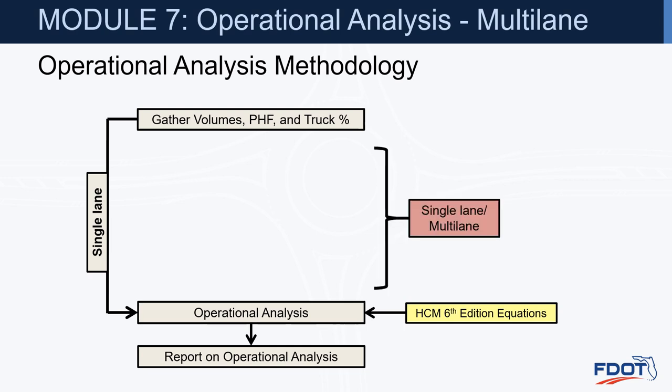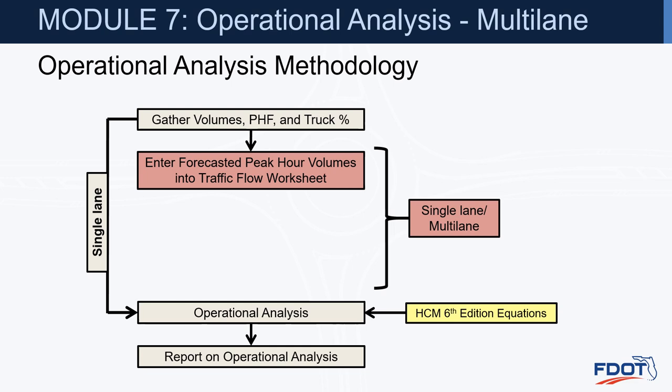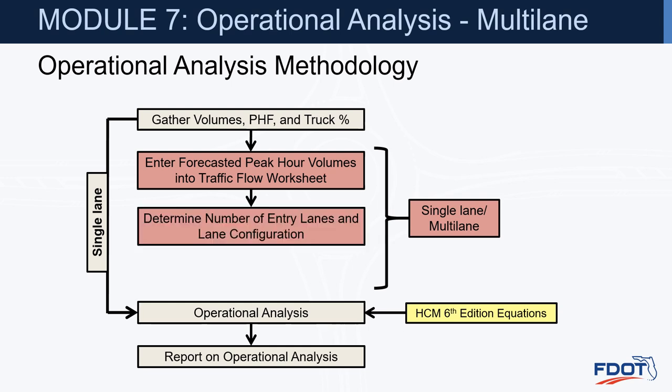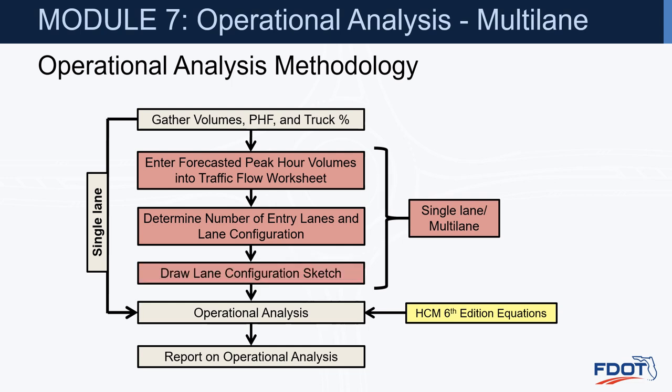When we're not sure if it's going to be a single lane or a multi-lane roundabout, we're going to enter our forecasted peak hour volumes into a traffic flow worksheet, determine the number of entry lanes and the overall lane configuration, draw a lane configuration sketch, and after completing that sketch, move into our operational analysis and complete the report.